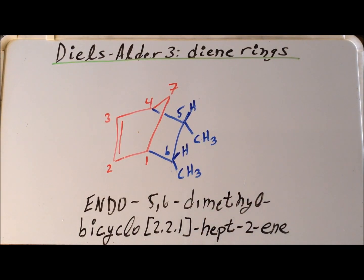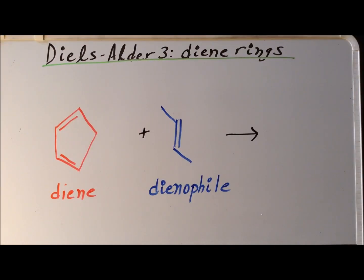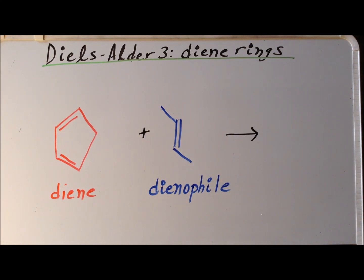Starting with 2-butene in the cis-conformation, we end up getting endo-5,6-dimethylbicyclo[2.2.1]hex-2-ene. For comparison, we are now going to look at the case where we keep the diene as our cyclopentadiene ring and replace the cis-butene with trans-butene. We will again see the computed structures for the dienophile, the transition state, and the product.